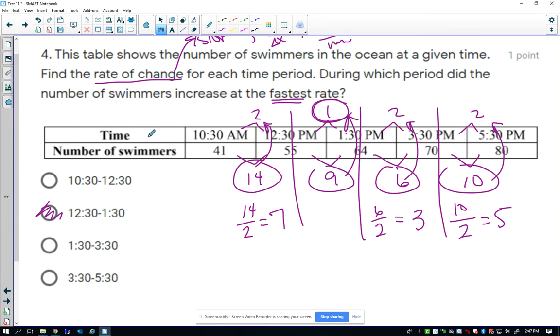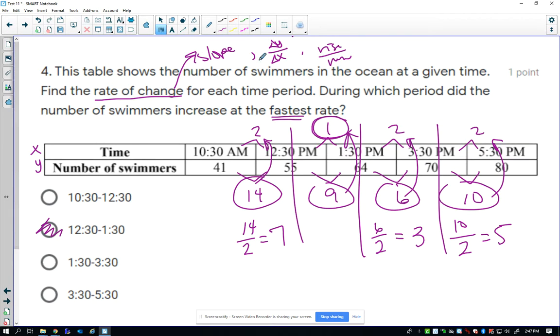Whenever we have a table that's laying like this, it is always change in y over change in x, and I said in the beginning, change in y over change in x or rise over run. So, the y goes on top of the x.